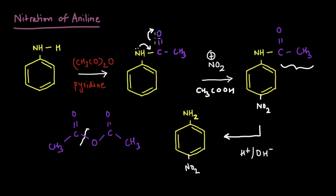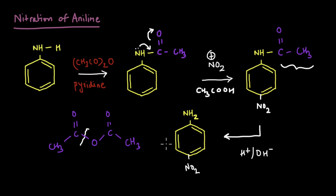This works because by adding the acetic anhydride group, we force the lone pair to go into resonance with the oxygen. Because the lone pair is now engaged with the oxygen, it activates the ring to a far lesser extent than NH2 alone. The group on the whole is still ortho-para directing, but the lone pair is shared much less with the ring, so the ortho-para directing effect is weaker. With steric hindrance blocking the ortho position, the para product becomes the major product.